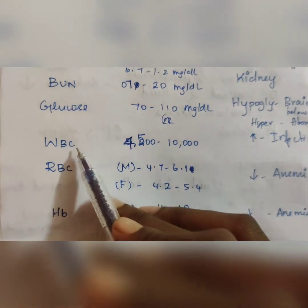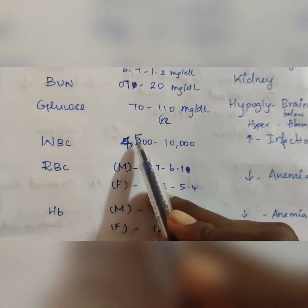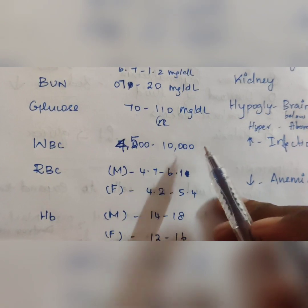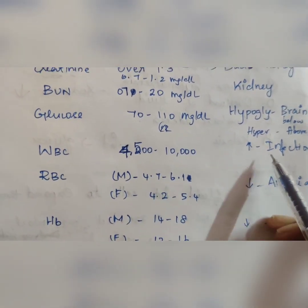Next, WBC, white blood cells. Normal range is 4,500 to 10,000. In case if the count increases, which indicates infection.